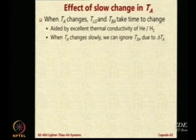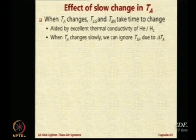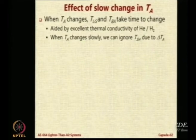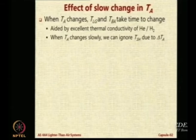However, both helium and hydrogen, which are commonly used LTA gases, are excellent in thermal conductivity. So they will quickly help the temperature equilibrium to be reached. And when the TA changes slowly, the superheat created because of change in ambient air temperature can be ignored, because superheat basically means temperature which has not been absorbed or equalized over a period of time.